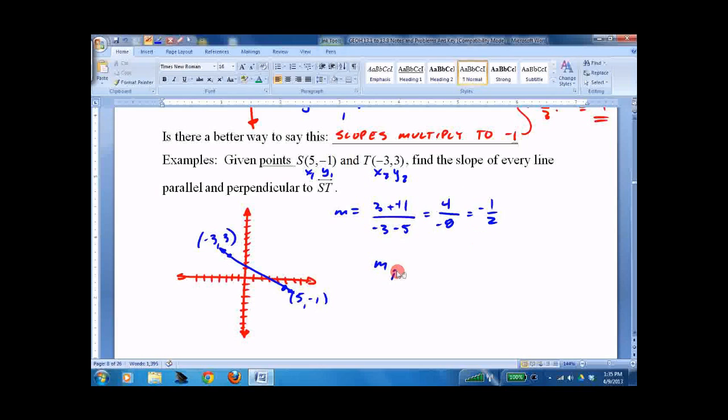So a parallel slope would be the same. And a perpendicular slope would be the opposite reciprocal. That's it. Get fast at doing slopes and fast at flipping them to make the opposite reciprocals. Good luck. Thank you.